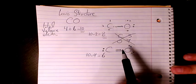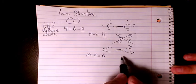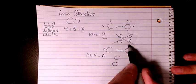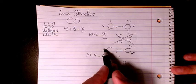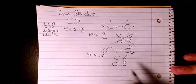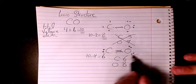Let's check the octet rule. So for oxygen we have two, four, six, and eight. And for carbon we have two, four, and six. So the octet rule is not valid for carbon.